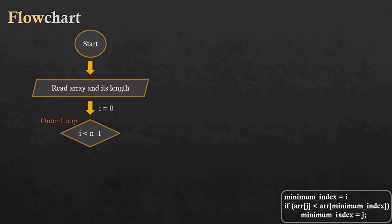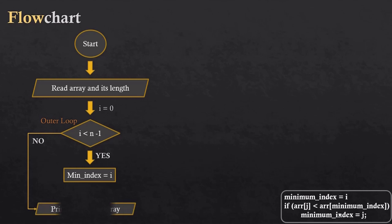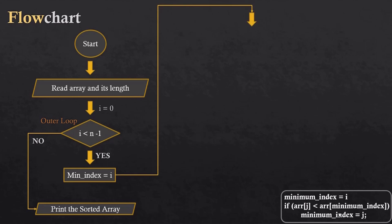The condition is i less than n-1, because we don't need to check the last index, so we read the array till n-1. As the condition is true, we set the minimum index equal to i, as seen previously. When this condition becomes false it means the array is already sorted, so we just display the array. For the inner loop we start from i plus 1 because we don't need to check the same index twice.